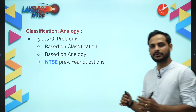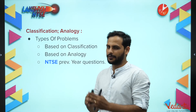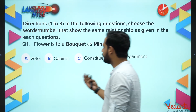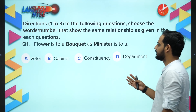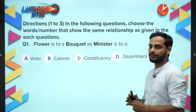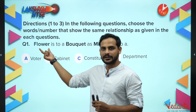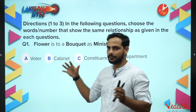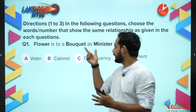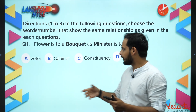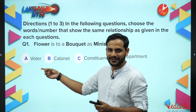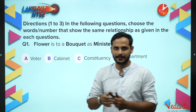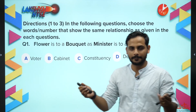First question: flower is to bouquet as minister is to what? When you take a group of flowers, they form a bouquet. So many ministers grouped together - they'll form a cabinet. Cabinet ministry - when many ministers are grouped, they form a cabinet.